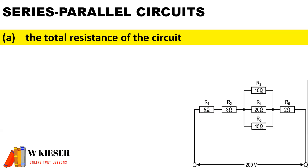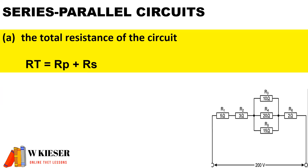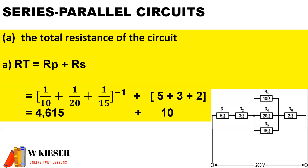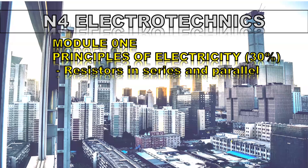Here we have a series-parallel combination: a parallel branch of three resistors connected to three resistors in series. To calculate the total resistance, we first calculate the parallel branch — 1 over 10 plus 1 over 20 plus 1 over 15, all to the power of minus one — and then add the series resistors of 5 ohms, 3 ohms, and 2 ohms. Therefore the total resistance for the combination circuit is 14.615 ohms.